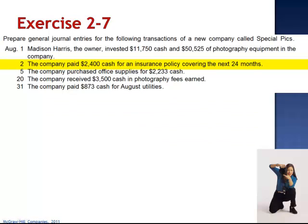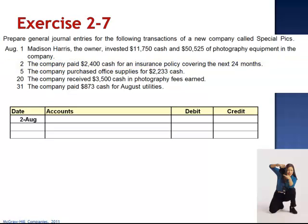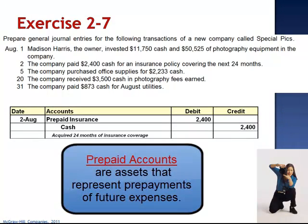On August 2nd, the company paid $2,400 cash for an insurance policy covering the next 24 months. The journal entry is a debit to prepaid insurance for $2,400 and a credit to cash. Prepaid accounts hold the value of an item that will be expensed in future periods. In this case, $2,400 is paid for future insurance coverage and will be converted systematically to expense over the two-year period. We'll see that in Chapter 3.